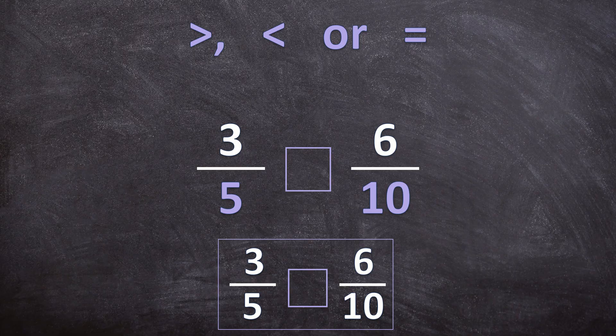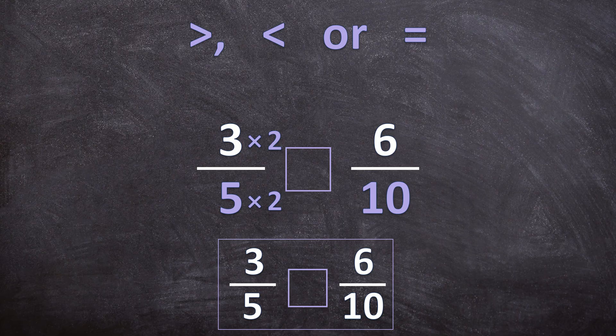Now we can start changing the fractions. How can I make the two denominators the same? If I multiply the 5 by 2 it's also going to be 10, so then our denominators will be the same. But remember, we cannot only multiply the denominator by 2 — we also need to multiply the numerator by 2. Let's change the denominator to 10: 5 times 2 is 10.